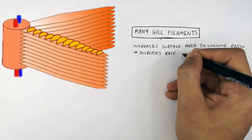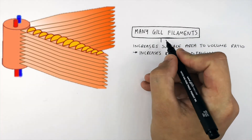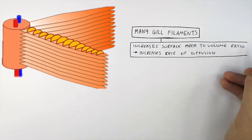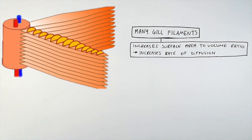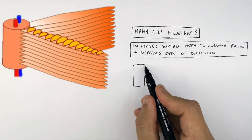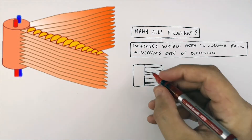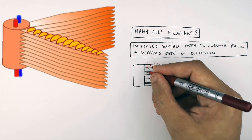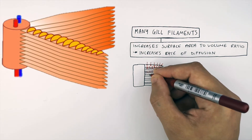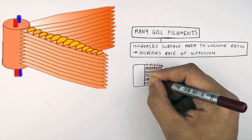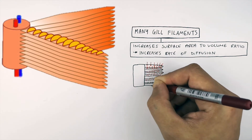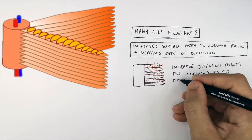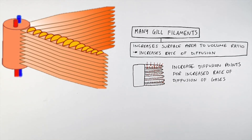This will therefore increase the rate of diffusion of oxygen into the blood and the rate of diffusion of carbon dioxide out of the blood and into the water. This is a side-on view of the gill. The gill filaments act to increase the surface area to volume ratio, which increases the rate of diffusion, because there are more diffusion points for oxygen to diffuse into the blood and carbon dioxide to diffuse out of the blood.